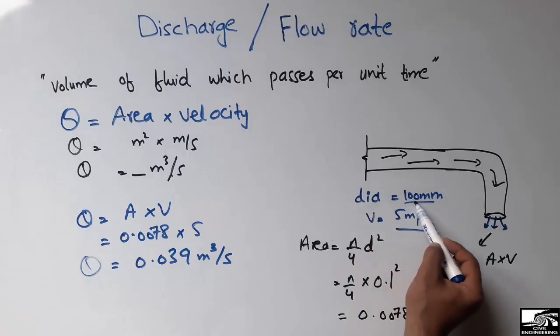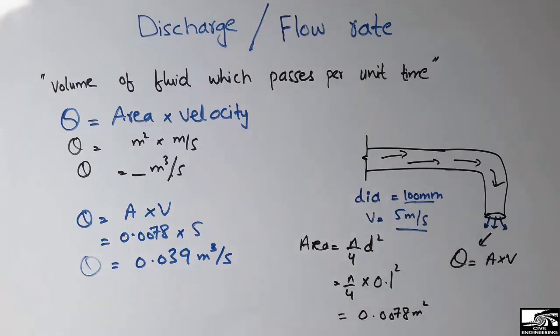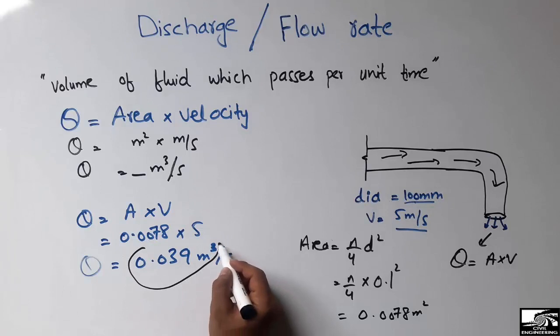So the discharge for this pipe having diameter of 100 millimeter with the fluid flowing at a rate of 5 meter per second - the discharge is 0.039 meter cube per second. It means that 0.039 cubic meters of fluid is flowing per second in this pipe.